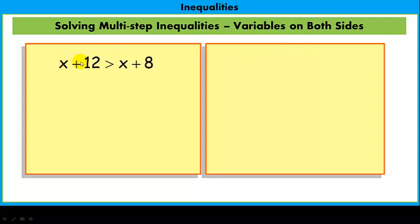The first case is something like this: x + 12 > x + 8. If we go ahead and try to solve it as we have before, we would subtract x from both sides. We've eliminated the variables and we're left with this statement here saying 12 > 8. Well, 12 is greater than 8 is one of those, yeah, of course, it's true.